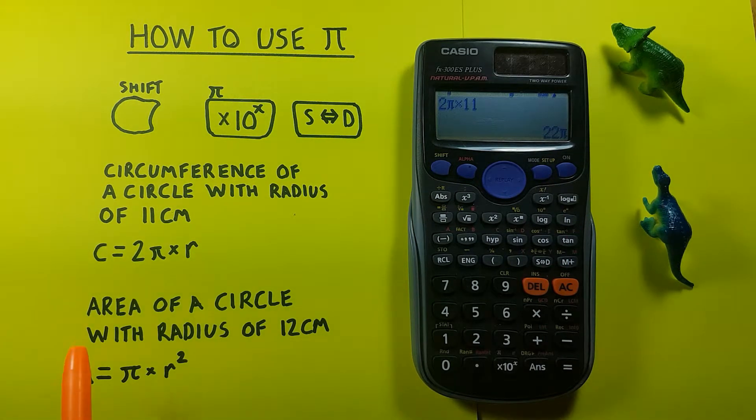Another example, if we want to determine the area of a circle let's say with a radius of 12 centimeters, we use this formula here: Pi times radius squared or Pi r squared.